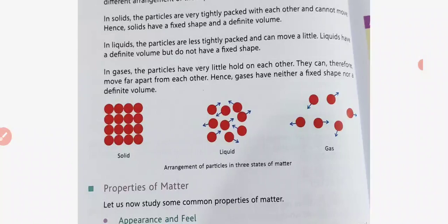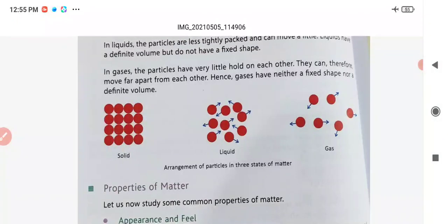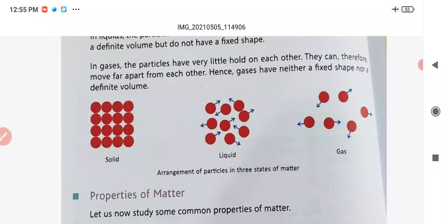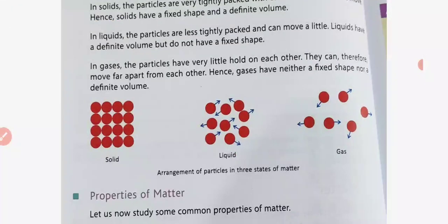In gases, the particles have very little hold on each other, so they can move apart from each other. Hence, gases have neither a fixed shape nor a definite volume. The particles of gases are very far apart from one another and do not stay close, so gases have no fixed shape and no fixed volume.